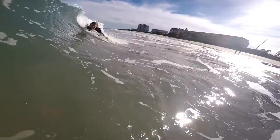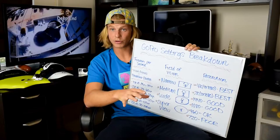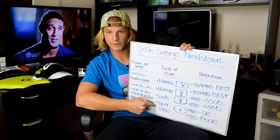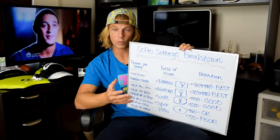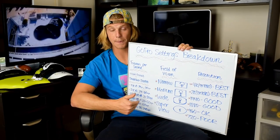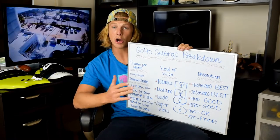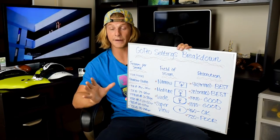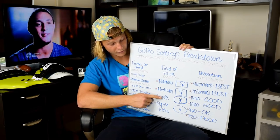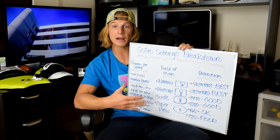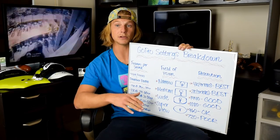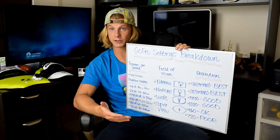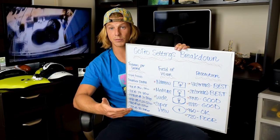Now let's jump back to field of vision — this is where things get a little trickier. When you change from narrow to medium to wide to super view, you are either adding or removing possibilities for frame rates. For example, if you want to shoot 1080 at 120 frames per second in a wide field of vision, you can. However, if you change your field of vision to 1080 at super view, you cannot shoot 120 frames anymore — it limits you to 80 frames per second, so you're losing 40 frames per second, which is substantial.